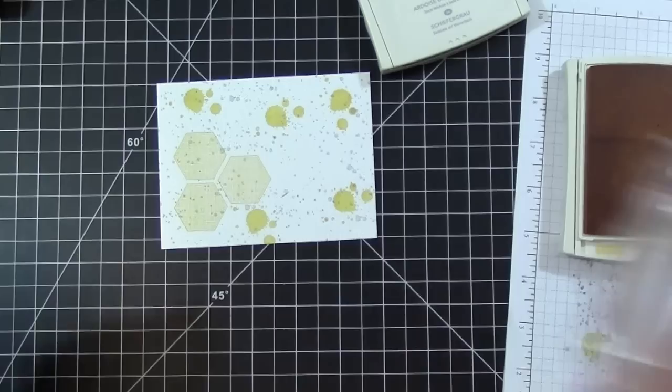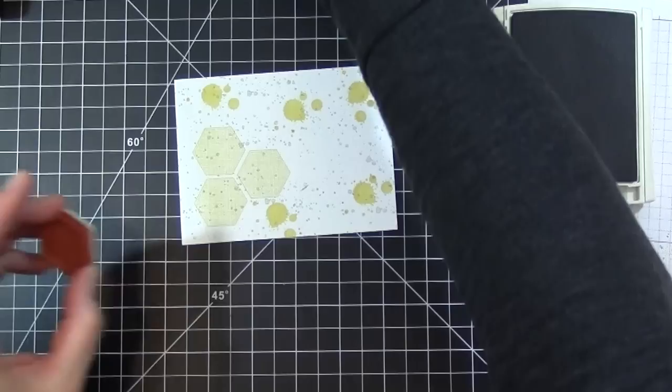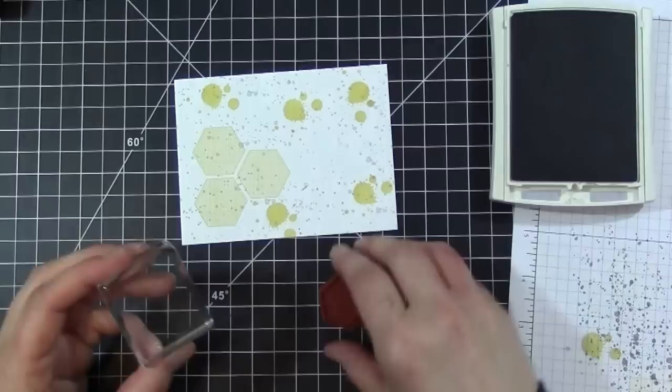The next thing I'm going to do is take the Smokey Slate and then I have another one of the images from the Six Sided Sampler. I'll mount that to my block.